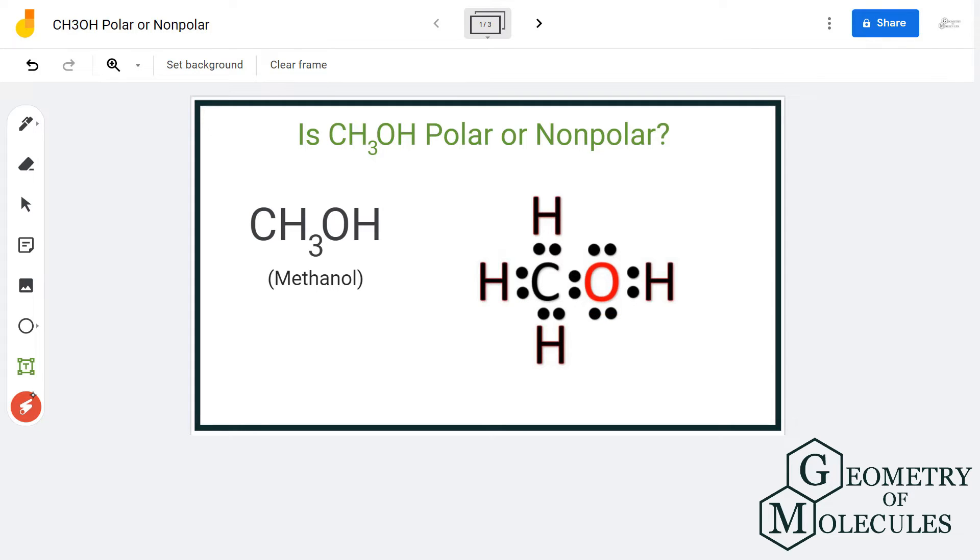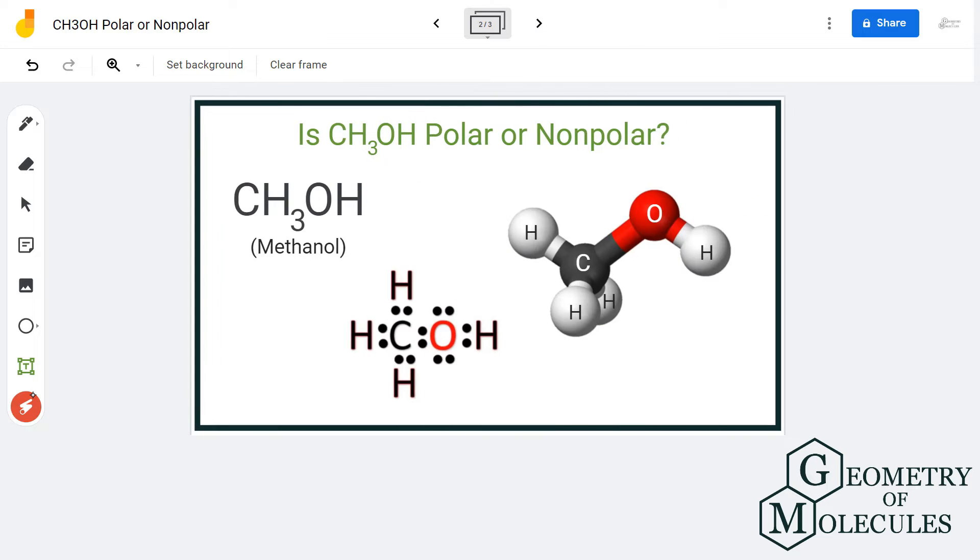As you can see in the Lewis structure of CH3OH, the distribution of electrons is not symmetric and it is an asymmetrical molecule. Hence there is a possibility that this molecule could be polar, but to further confirm it we will check the electronegativities of the atoms involved.